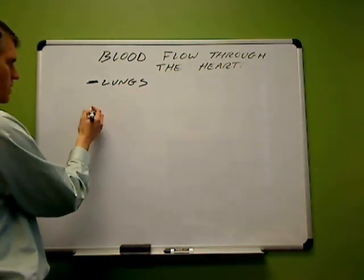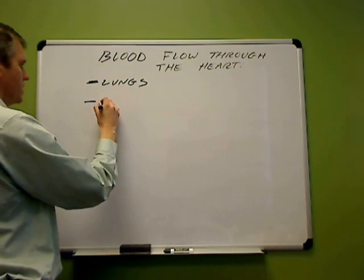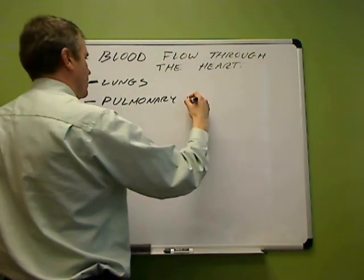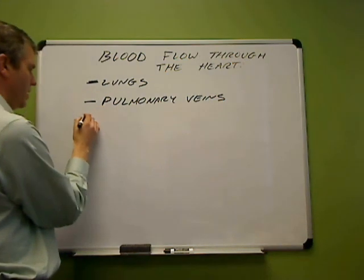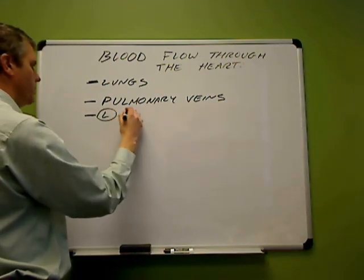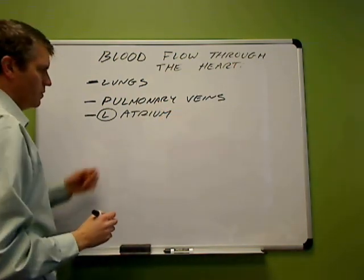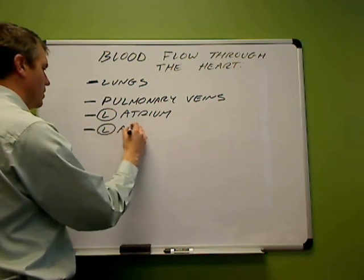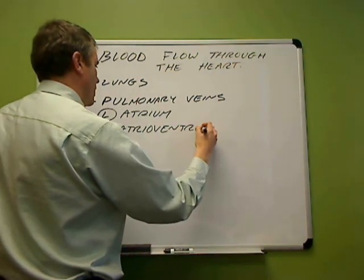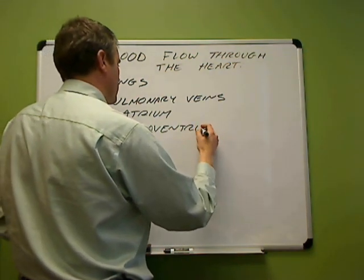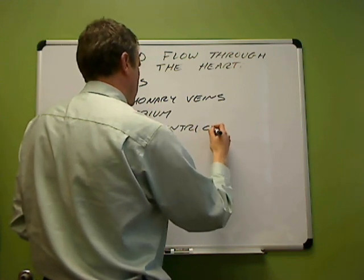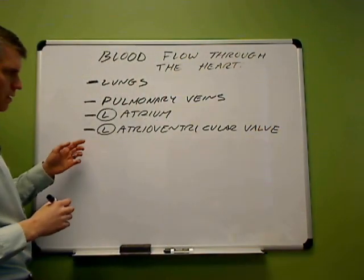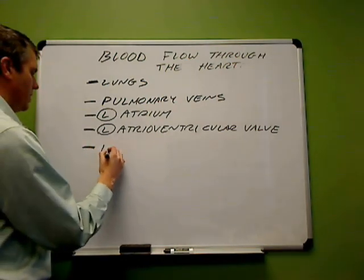That covers the right side of the heart. Starting from the lungs: from the lungs, the blood is going to pass to the heart through pulmonary veins and enter the heart in the left atrium. From the left atrium, the blood is going to pass through the left atrioventricular valve.